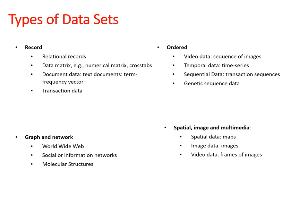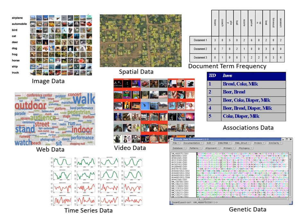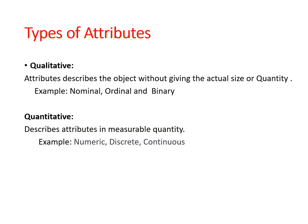There are different types of datasets available: matrix data, document data, video data, temporal data, sequential data, spatial data, social network data, and graph-related data. We can also have image datasets for image processing, satellite imagery, textual data, web data, genetic data, and time series data for stock market predictions and similar applications.